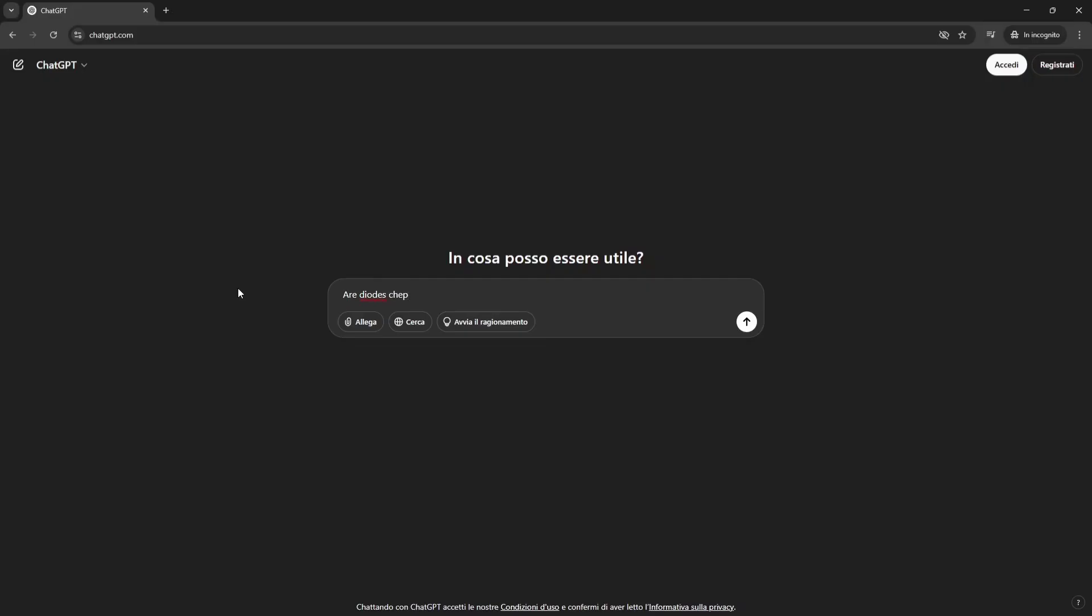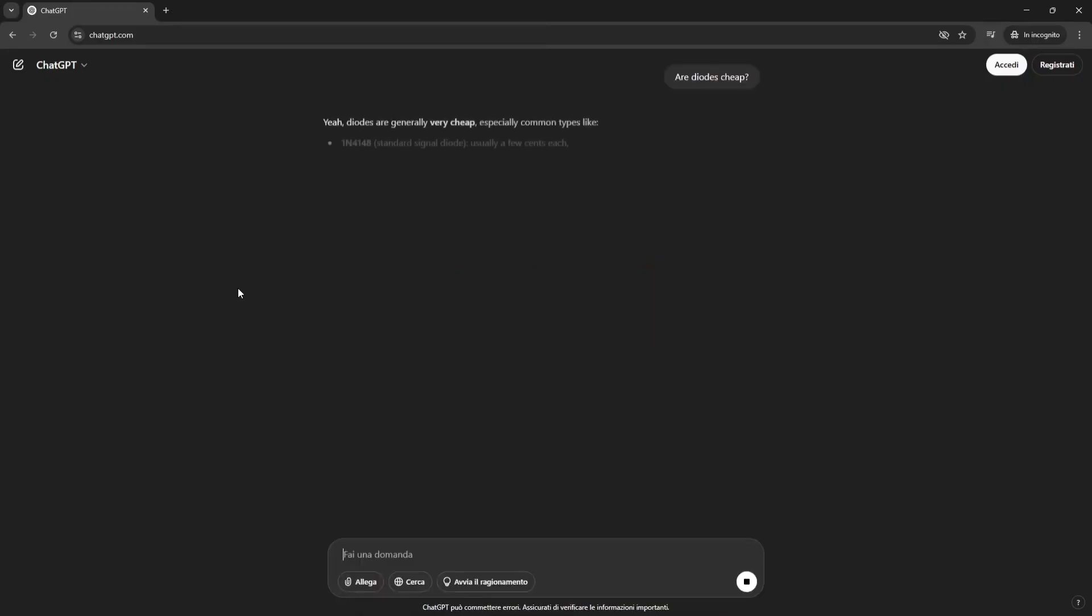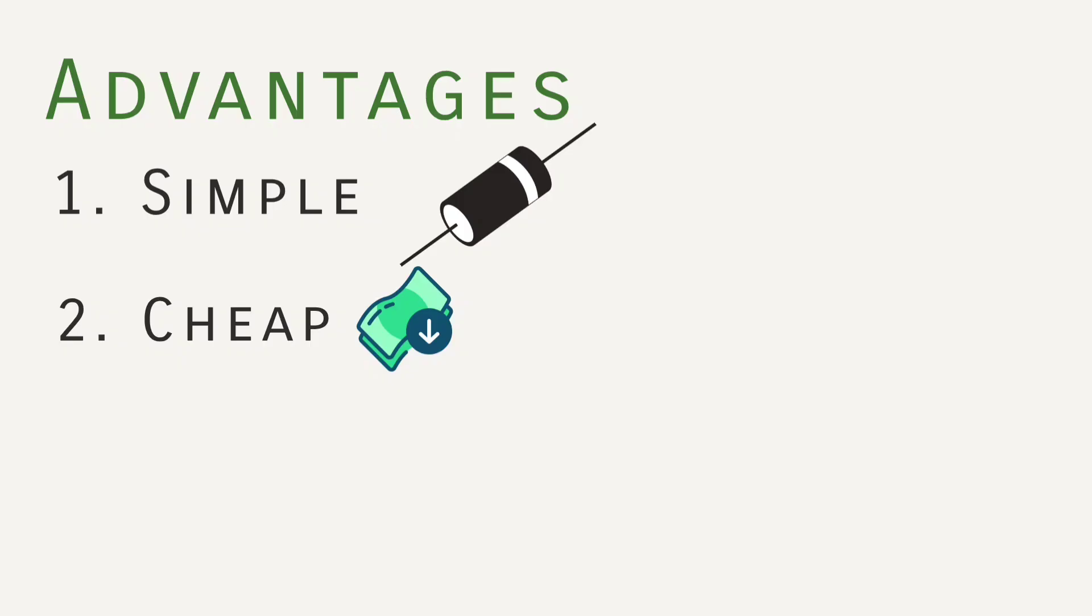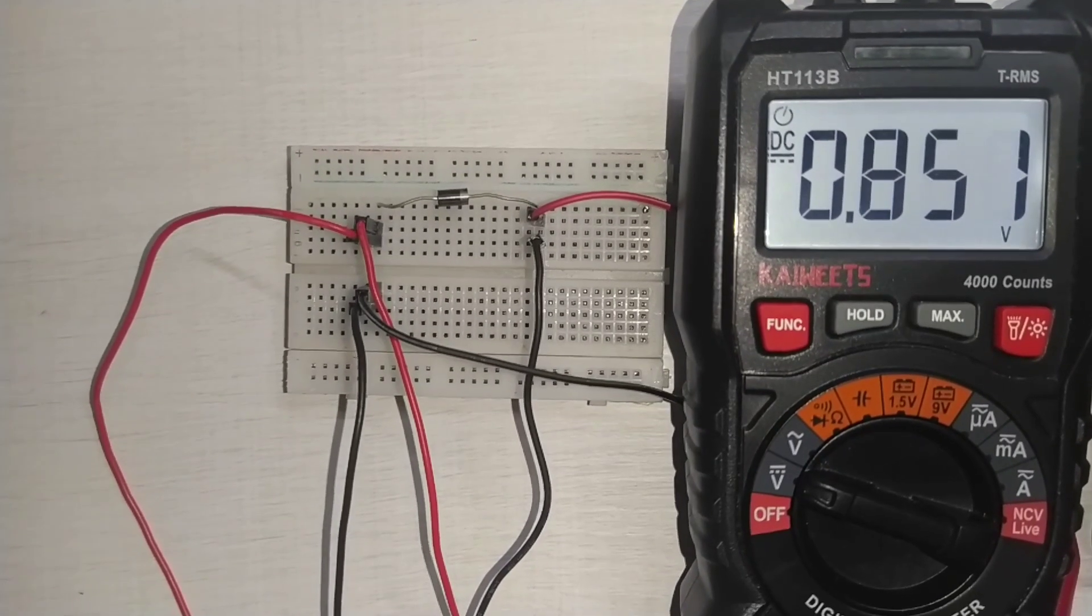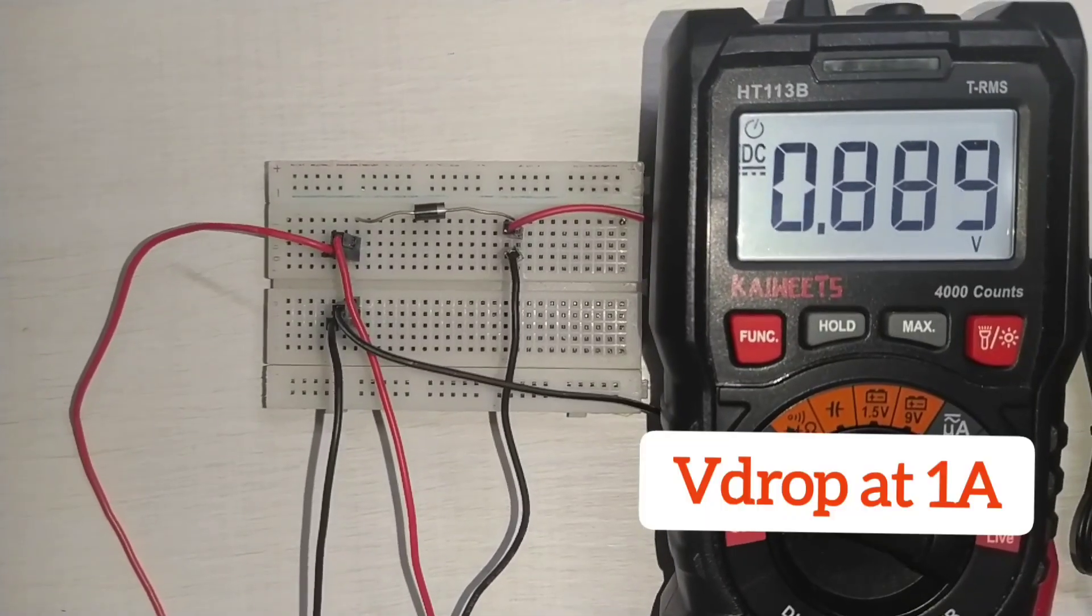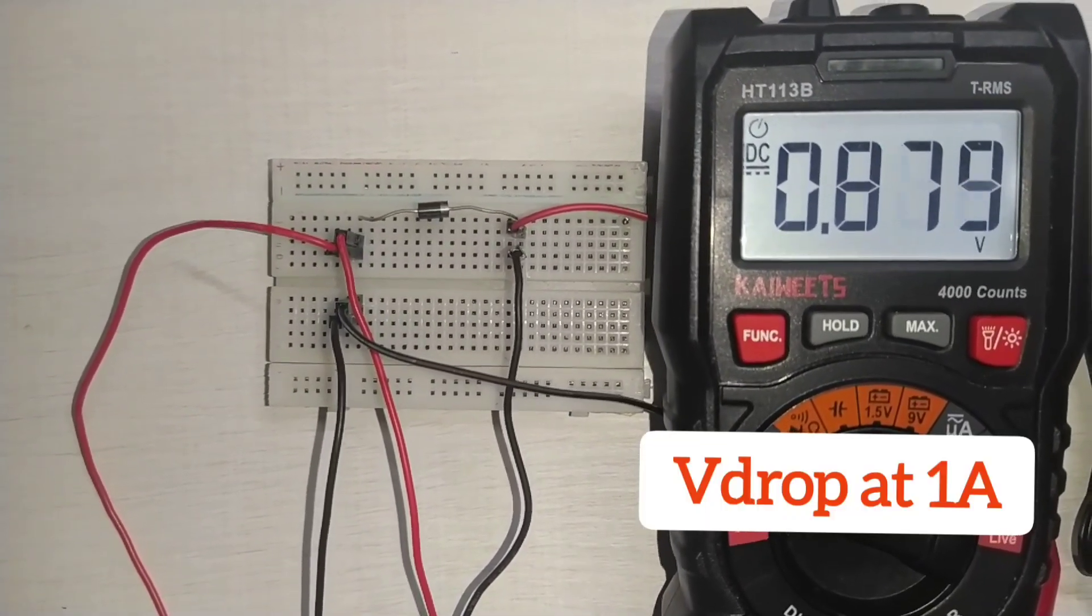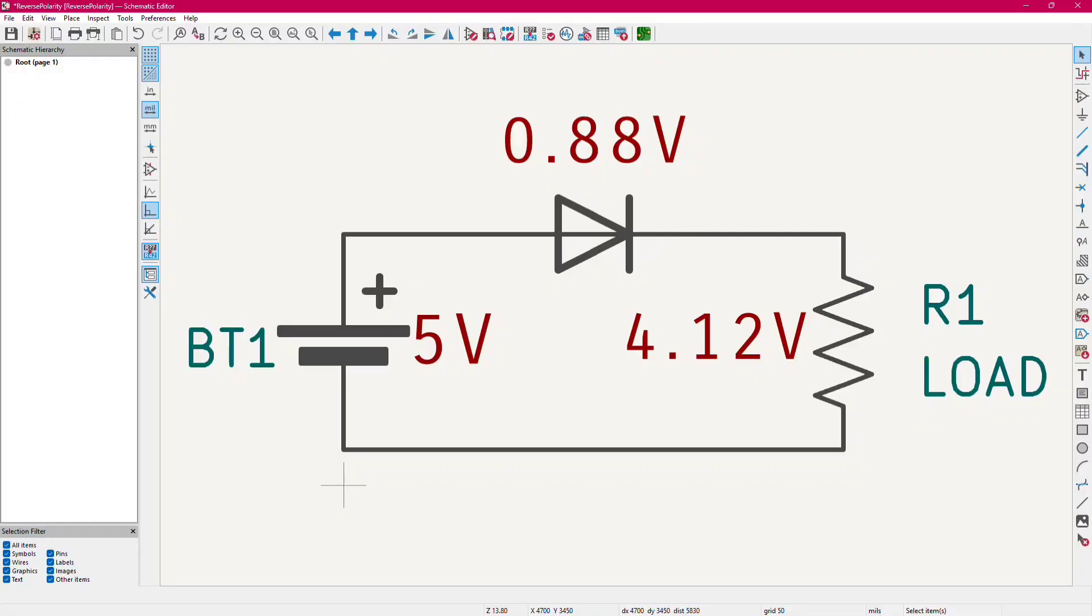So one big advantage here is the simplicity. We really need just one component. It's cheap protection as diodes have negligible cost, and we can use it in really high voltage circuits. As we can have diodes with 1kV reverse breakdown voltage or more. But unfortunately diodes are not suitable for low voltage electronics, as they have a voltage drop that depends on the diode you choose. And so the higher the current, the bigger the power loss.